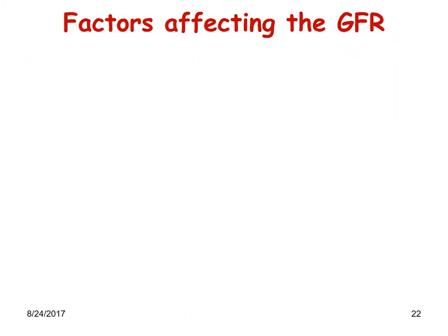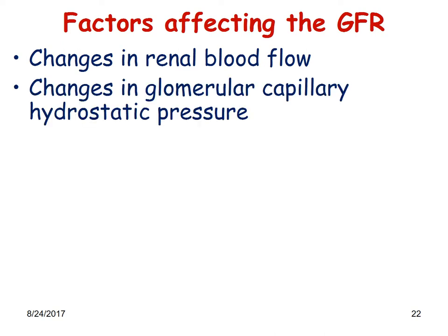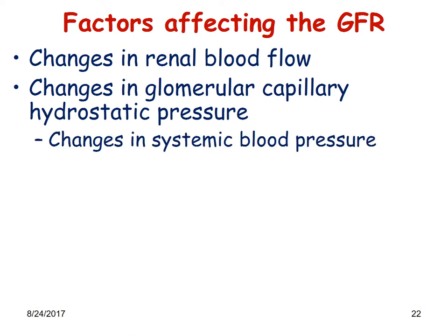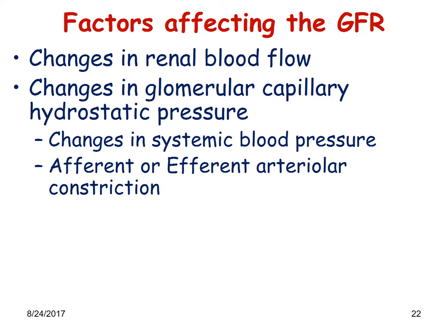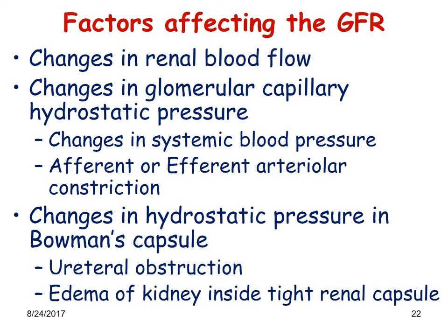Now let us look at factors affecting the glomerular filtration rate. Number one: changes in renal blood flow — depending on blood flow, the amount of filtration will alter. Number two: changes in glomerular capillary hydrostatic pressure, changes in systemic blood pressure, and afferent and efferent arteriolar constriction — which one constricts will alter GFR. Changes in the hydrostatic pressure in the Bowman's capsule also affect GFR, such as ureteral obstruction and edema of the kidney inside a tight renal capsule.